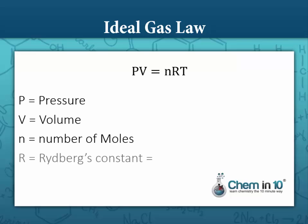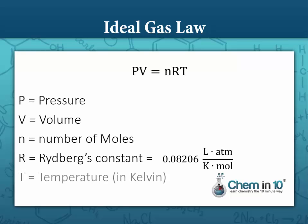Remember, the ideal gas law is PV equals nRT, where P is pressure, V is volume, n is number of moles, R is the gas constant — 0.08206 liters atmosphere per k-mol — and T is temperature in Kelvins.